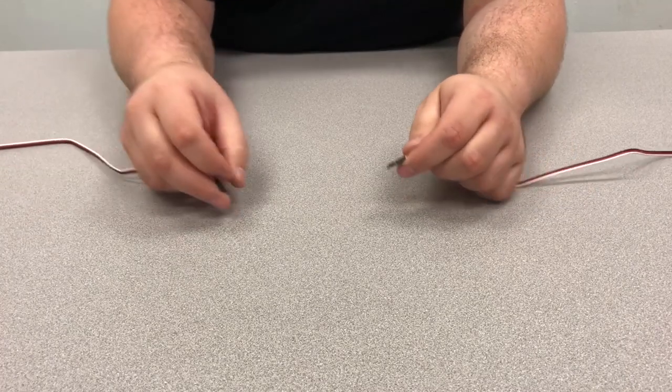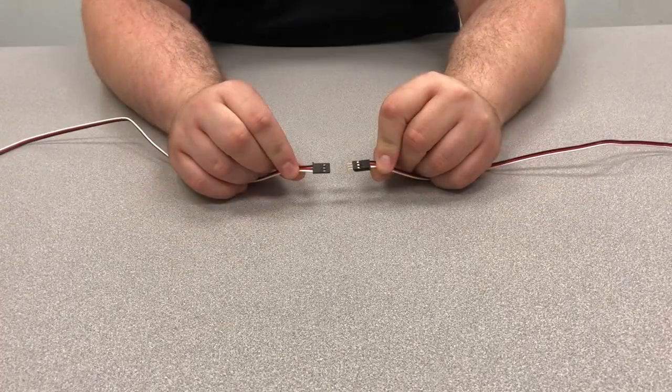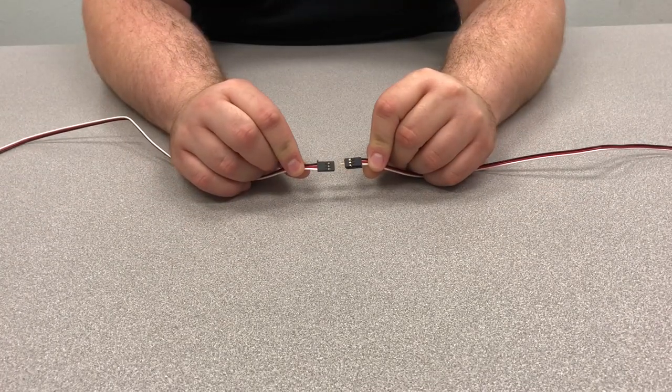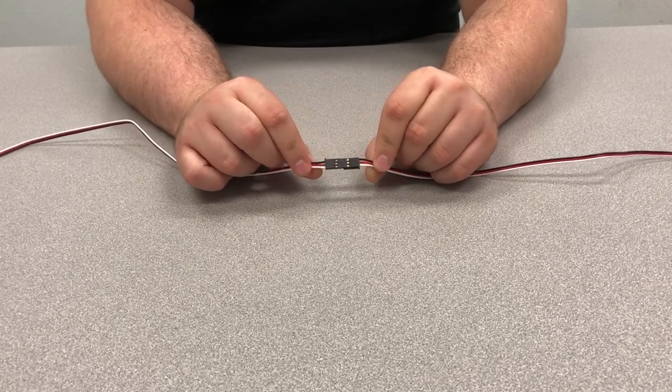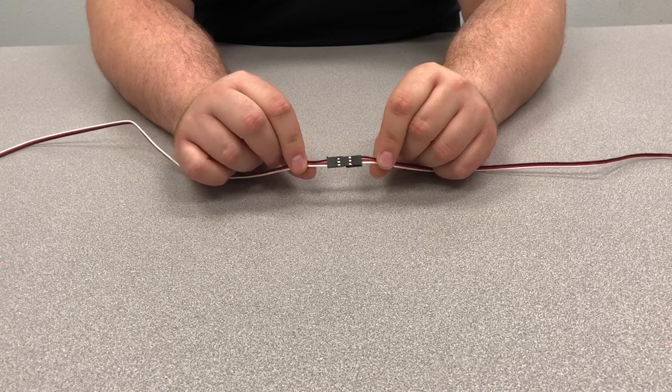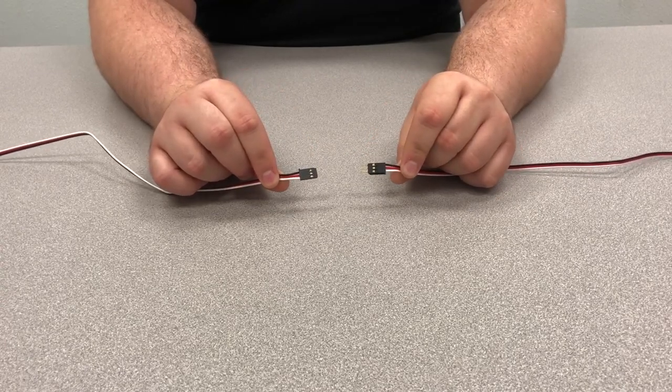Teams at FRC and FTC use the 0.1 inch servo connector in many different ways, from connecting to the PWM output on the robot controllers to connecting to sensors. However, these connectors don't have any locking feature, which makes them easy to become disconnected even when you don't want them to.